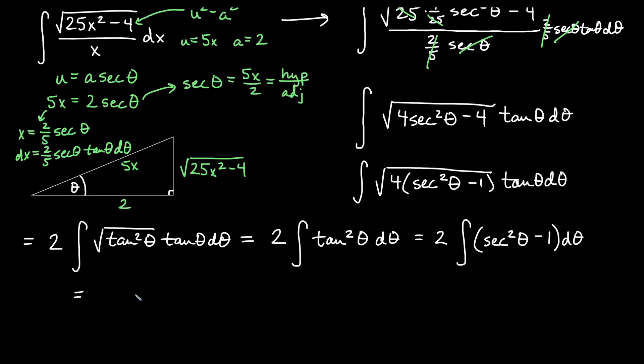So we will actually get 2 tan theta for this one. And then I would get minus theta. I'll distribute the 2 so that'll be minus 2 theta plus c here.